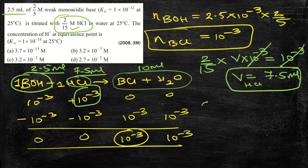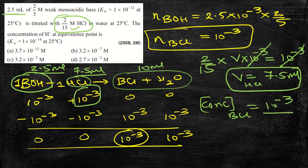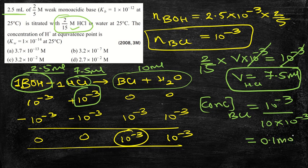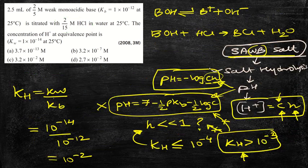Now we can find the concentration of BCl: C = moles / volume = 10⁻³ mol / (10 × 10⁻³ L) = 0.1 mol/L. So the concentration of the salt solution is 0.1 M.